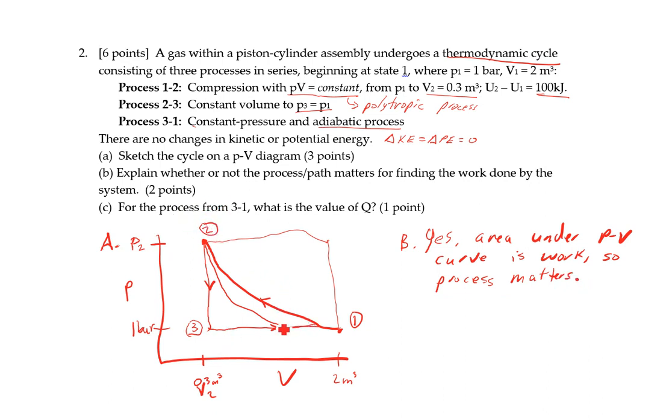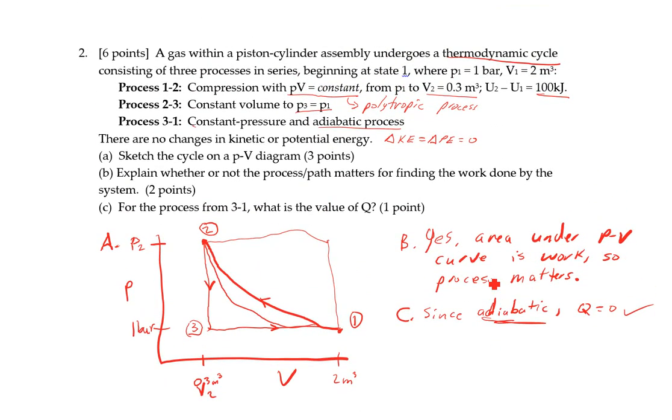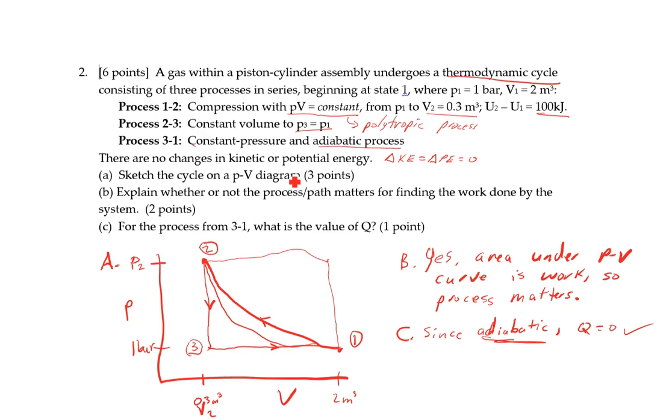Then last, from three to one, since adiabatic means we have no heat transfer, Q equals zero. It's just testing that you knew adiabatic and what that means, that Q is zero. So that's the end of the solution to quiz one for mechanical engineering thermodynamics, fall 2019 at Dunwoody College of Technology.